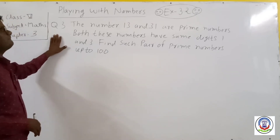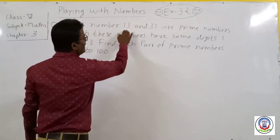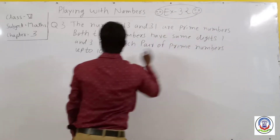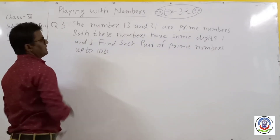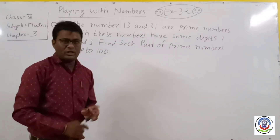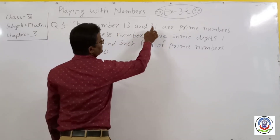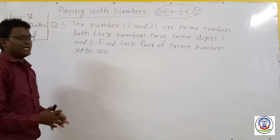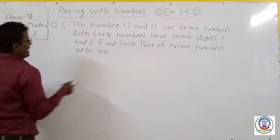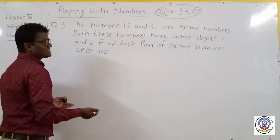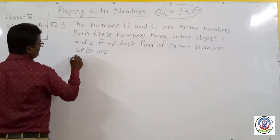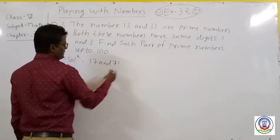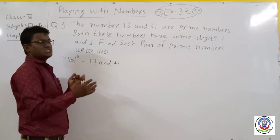First of all, we will solve question 3. In question 3, the numbers 13 and 31 are prime numbers. Both these numbers have the same digits 1 and 3. We need to find such pairs of prime numbers up to 100. The first such pair is 17 and 71, where the digits 1 and 7 are the same.